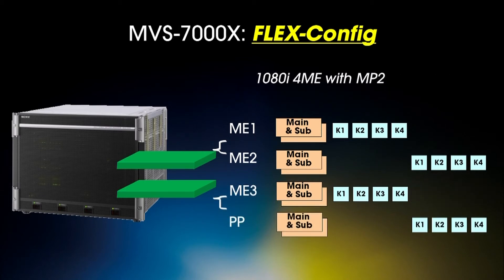Here's another configuration if you wanted a 4ME switcher but didn't need eight keyers everywhere. I'm using two boards and splitting them both down the middle, giving me a true 4ME switcher where each one has four keyers. It's virtually identical to the MVS8000G.